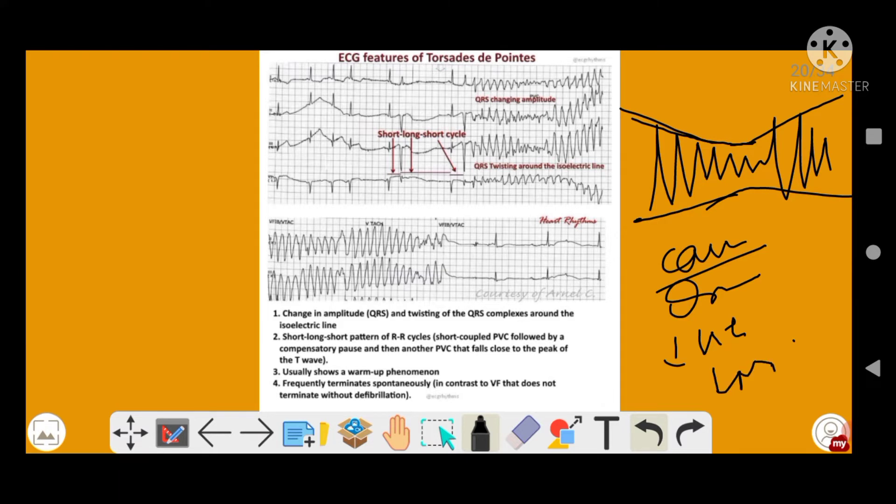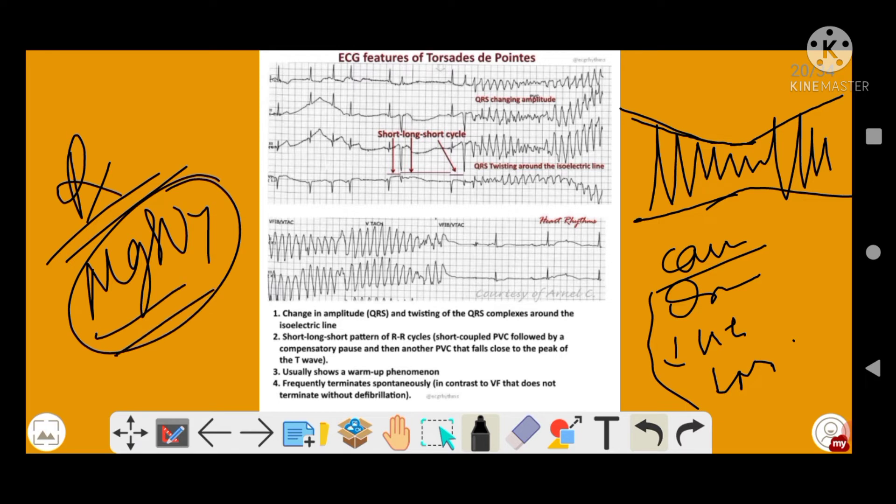All these are causes of your torsades de pointes. So causes are drugs, conditions that decrease potassium, conditions that decrease magnesium, and other congenital abnormalities. Main important point is the treatment here. Remember, treatment is magnesium sulfate.